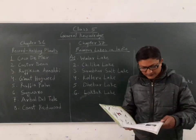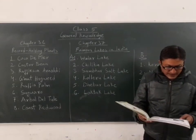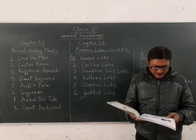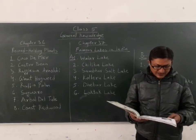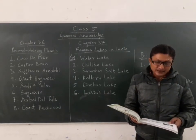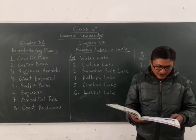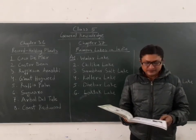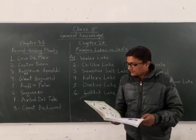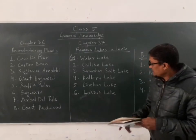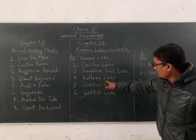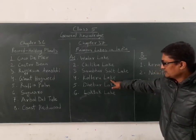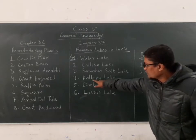Fourth: it is situated in Rajasthan. It is the largest freshwater lake in India and is an important habitat for migratory birds. The answer is Keoladeo Lake.